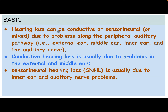Basics. Hearing loss can be conductive, sensorineural, or mixed, due to problems along the peripheral auditory pathway — external ear, middle ear, inner ear, and auditory nerve. Conductive hearing loss is usually due to problems in the external and middle ear; sensorineural hearing loss is usually due to inner ear and auditory nerve problems.